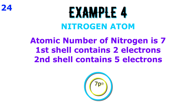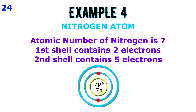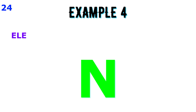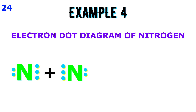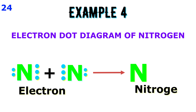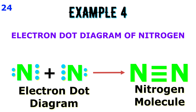Nitrogen: A nitrogen atom has five electrons in its outermost shell. It needs three electrons to complete its octet and attain the configuration of the inert gas neon. Hence, two nitrogen atoms combine by sharing three pairs of electrons between them and form a stable covalent molecule. Three pairs of shared electrons are shown by a triple line and form a triple covalent bond.